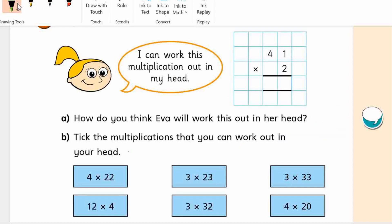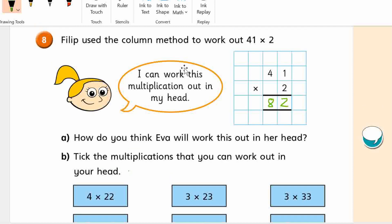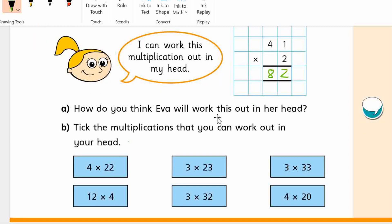I can work this multiplication out in my head. So she can work this out in her head. And it's true, because 2 times 1 is 2. 2 times 4 is 8. You can do this in your head. Yeah? 41 times 2. You can figure that one out in your head. You don't need to write it out. Okay? Let's have a look.